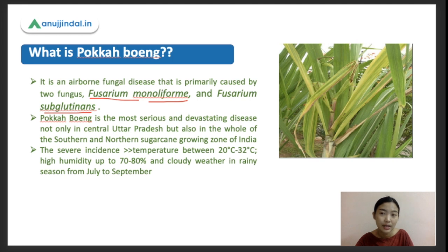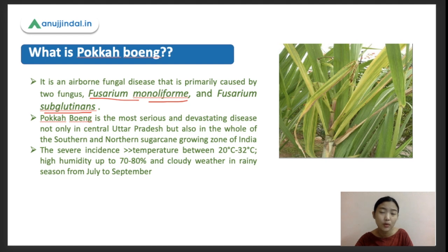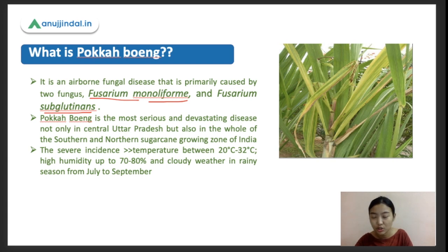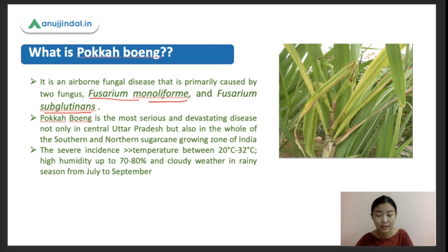The disease also needs high humidity of up to 70 to 80%, which means it needs higher rainfall and cloudy, rainy weather. Right now it's the onset of the monsoon - July to September - so now is the right time for this fungal infection, and it has a huge impact on current sugarcane production.